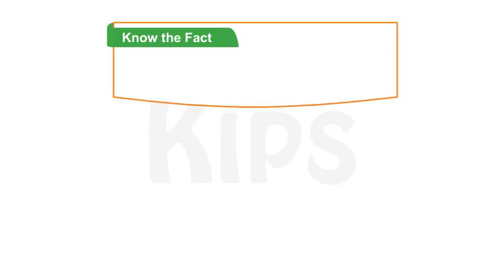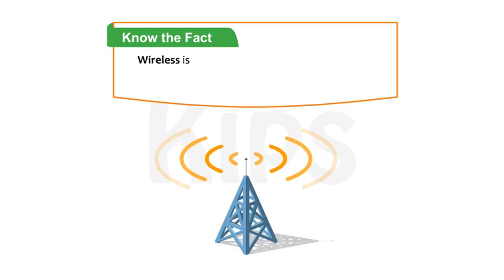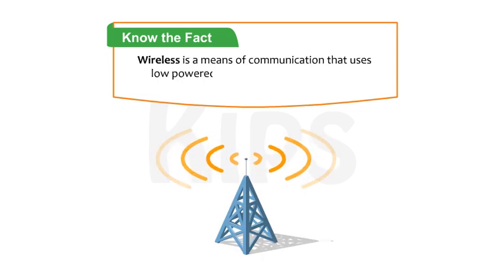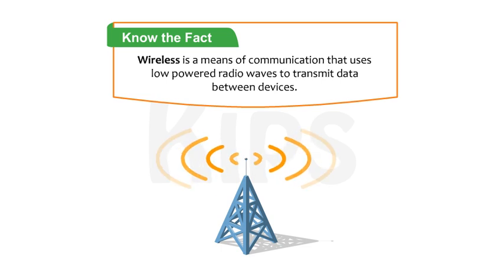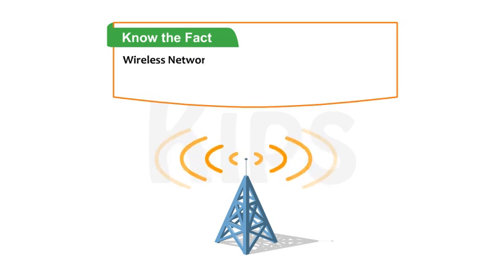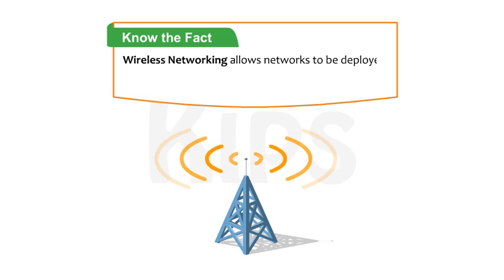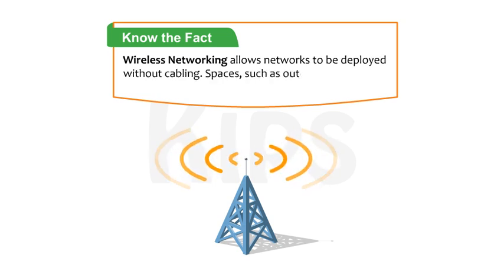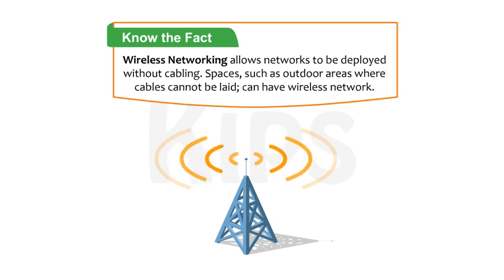An interesting fact: wireless is a means of communication that uses low-powered radio waves to transmit data between devices. Wireless networking allows networks to be deployed without cabling. Spaces such as outdoor areas where cables cannot be laid can have a wireless network.